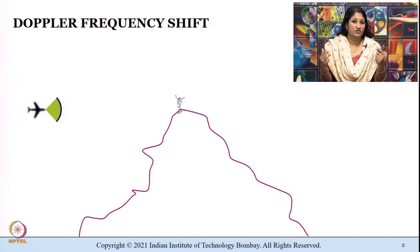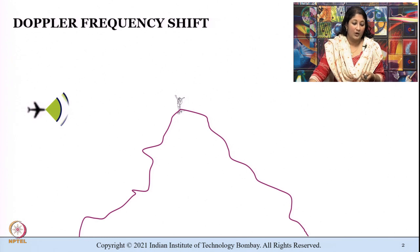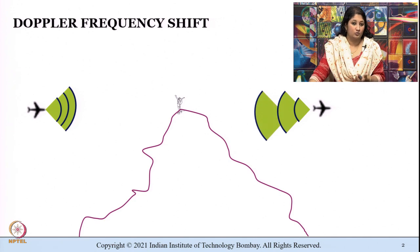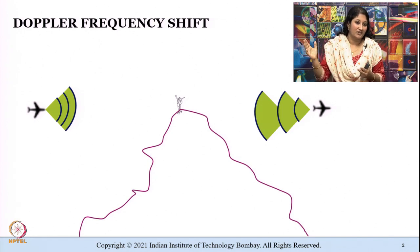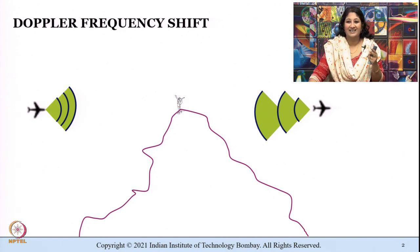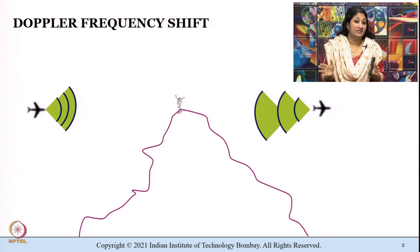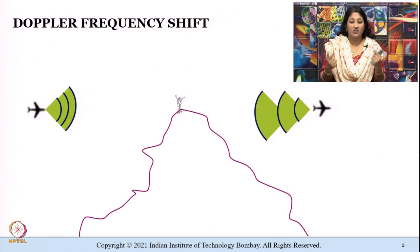What just happened was you heard a different frequency or a different pitch when the jet was approaching you, and another pitch when the jet was moving away from you. This apparent change in frequency or pitch when a sound source is either moving towards or away from a listener is called the Doppler effect.